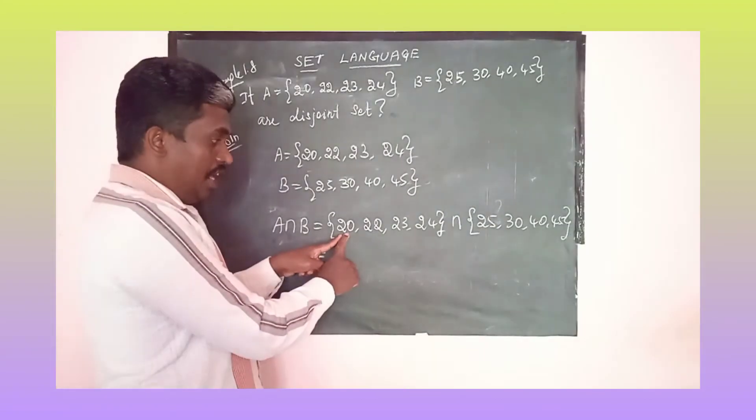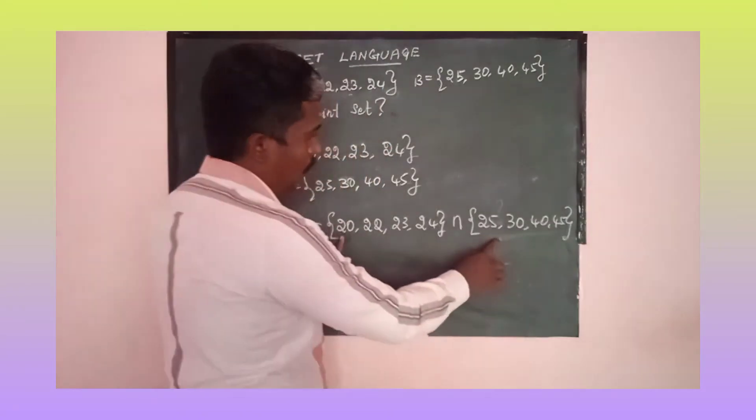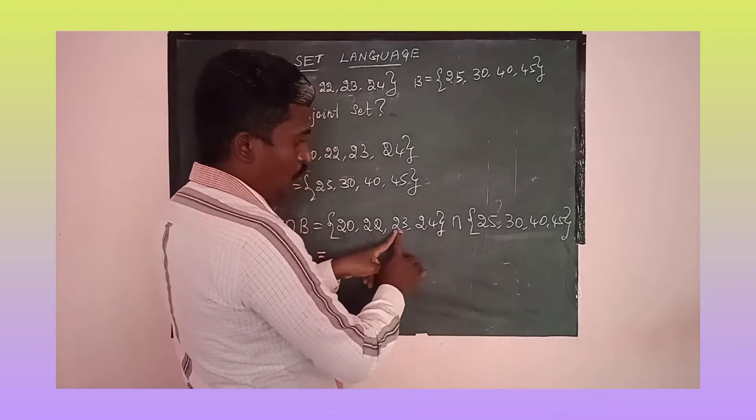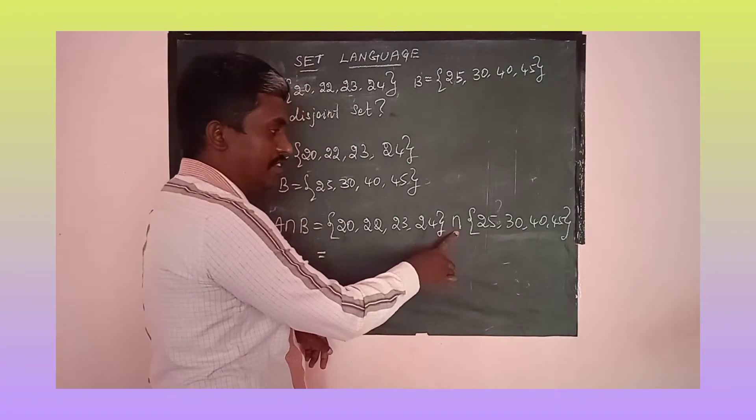From here, 20 is the first element. Is there any 20 there? No. Then 22. Is there any 22? No. Then 23, it is also not there. 24, it is also not there. So there is no intersection.